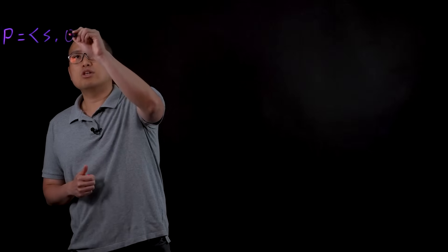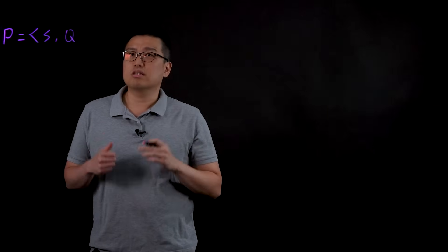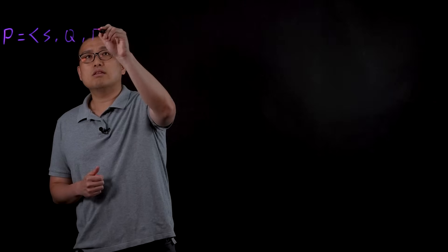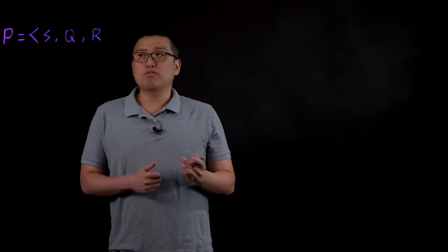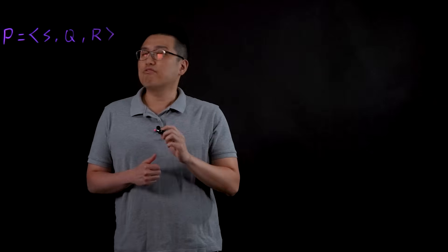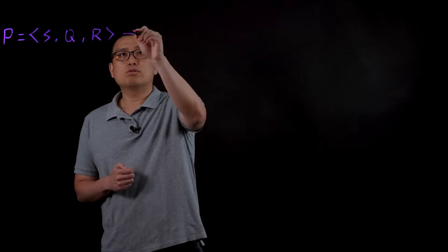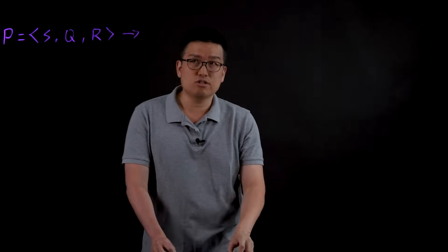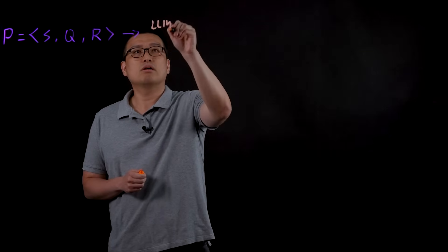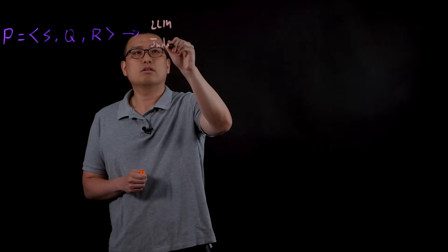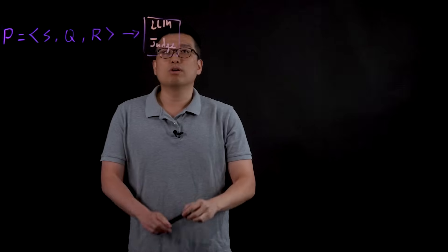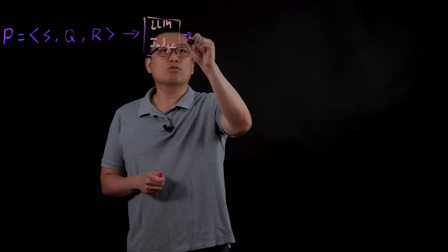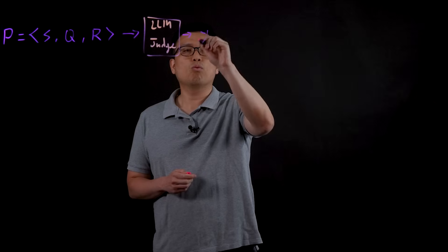And then the second component is Q, the actual question that we want to ask the judge. And then finally R, which is the candidate responses that we are going to provide to the judge. So we will feed this prompt to a language model as a judge, which we call LLM judge. And this judge function will give us a response or a prediction that we call Y.